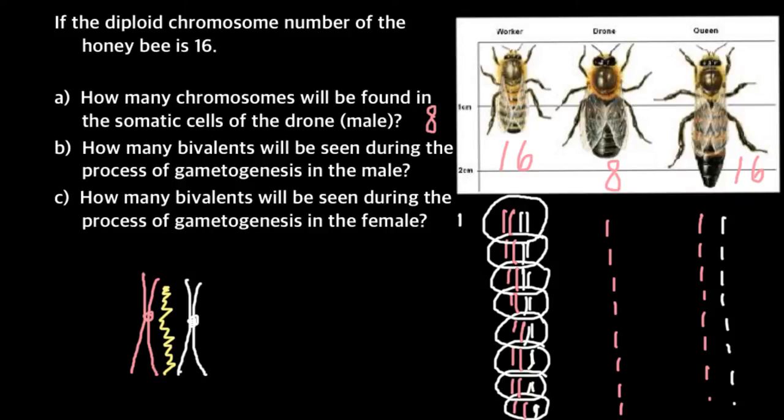So the question of how many bivalents will be seen during the process of gametogenesis in the male should be answered as zero. There are not going to be any bivalents or tetrads in the male. So the answer is zero.